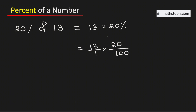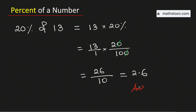Now cancel the common zero. So it will be equal to 13 times 2, which is 26, divided by 1 times 10, which is 10, and this is equal to 2.6. Therefore, 20 percent of 13 is equal to 2.6, and this is our final answer.